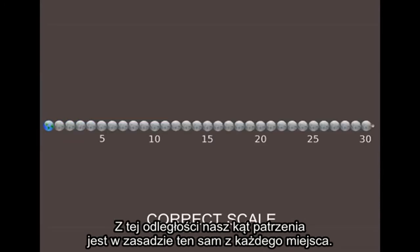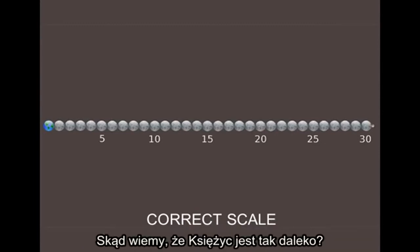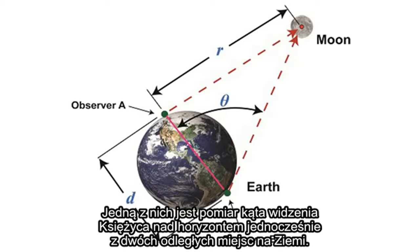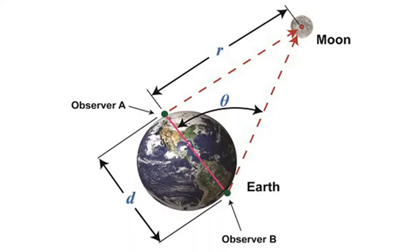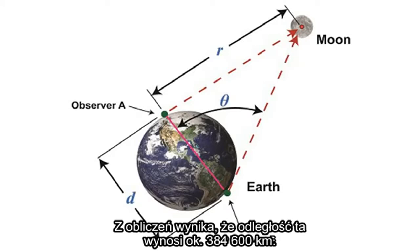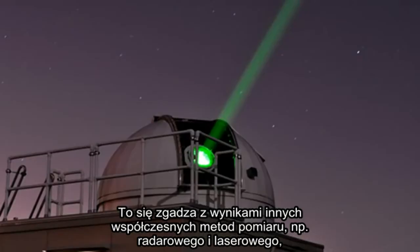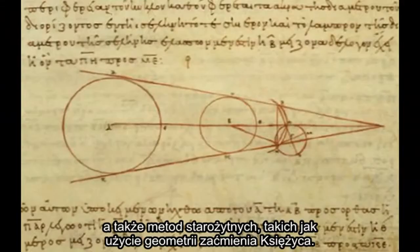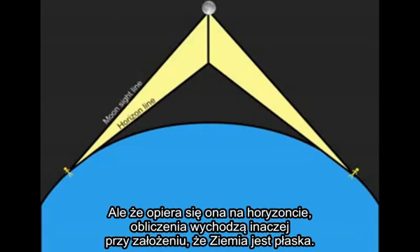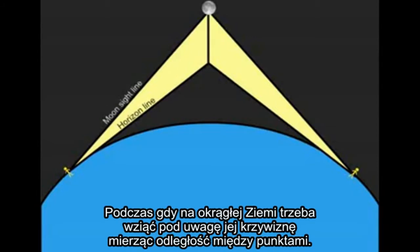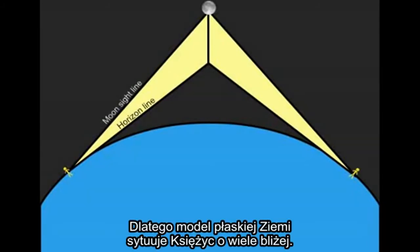The moon is about 239,000 miles from earth. In most diagrams you will see them close together, but when drawn to scale, the moon is way out in the distance — about 30 times the width of the earth away. This is why we are able to see the same face of it from everywhere on earth. One way to determine the distance is by measuring the moon's angle above the horizon simultaneously from two distant points on earth and using simple trigonometry to calculate the height. The distance comes out to around 239,000 miles.